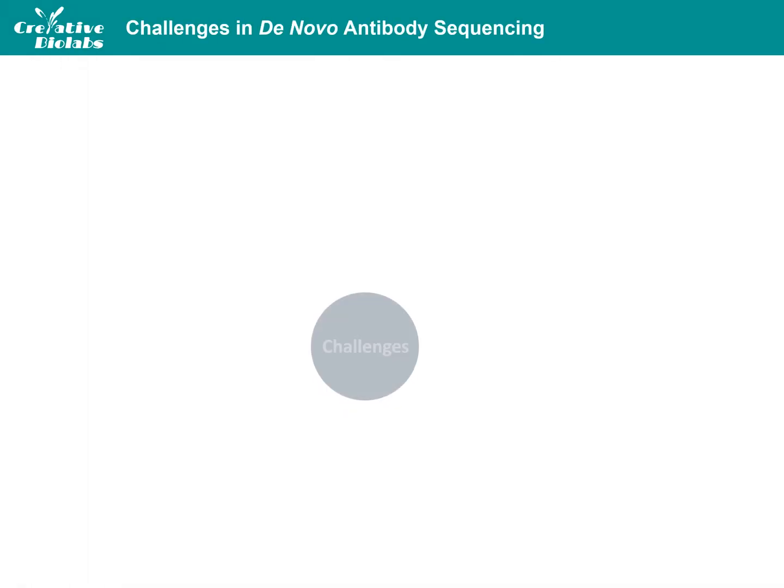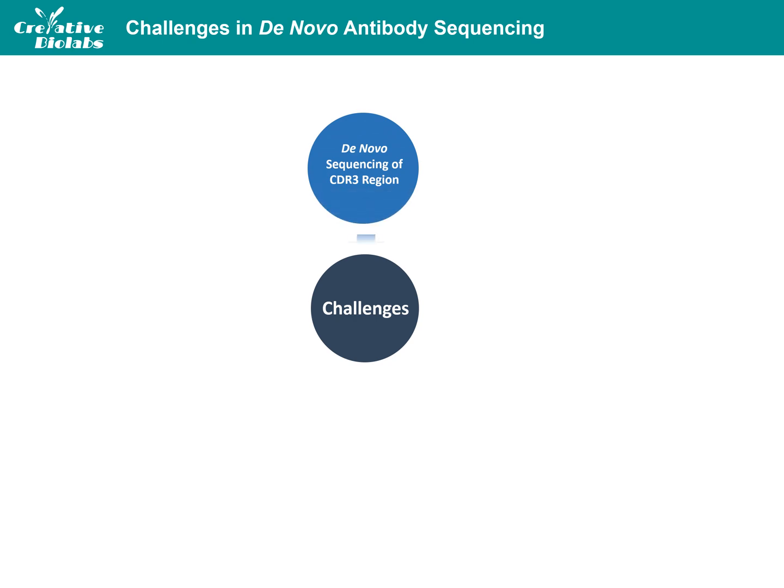Despite the broad range of applications, de novo antibody sequencing faces several challenges. The first challenge is the de novo antibody sequencing of the CDR3 region. It is difficult to determine antibody variable region sequences without error, especially in CDR3. While the CDR3 of the light chain is mostly encoded by the germline sequences, the CDR3 of the heavy chain is usually not available in databases. It is encoded by the so-called D segments, but these are modified by nucleases and terminal transferases. Typically, only 1 to 4 amino acids of a D segment remain in the matured antibody, and the rest of the D segment is artificial and has to be sequenced de novo.